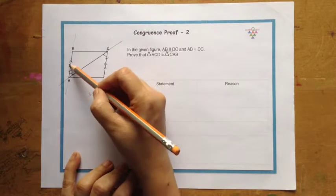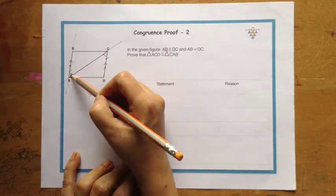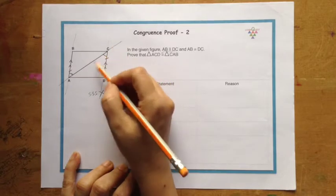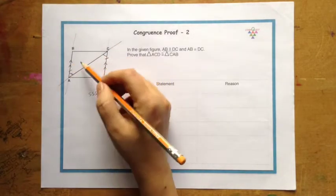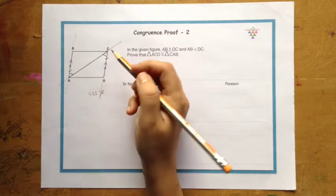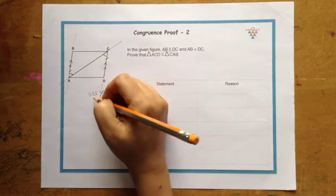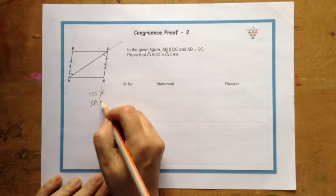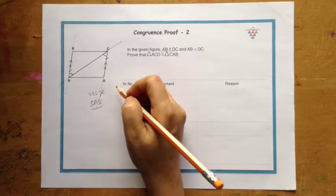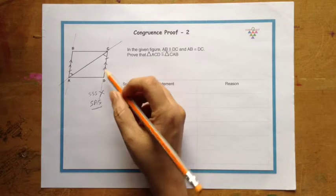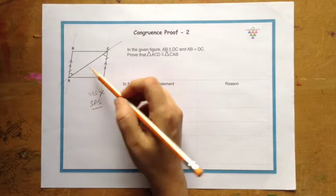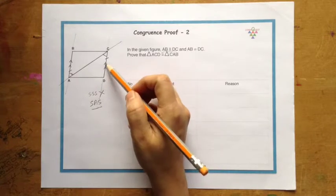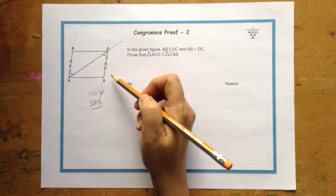So we have one side, the angle, and a side—side, angle, side. So we know these are equal in both these triangles. So we cannot use SSS, but we can use SAS congruence test because two sides and the included angle of this triangle are equal with two sides and included angle of this triangle.